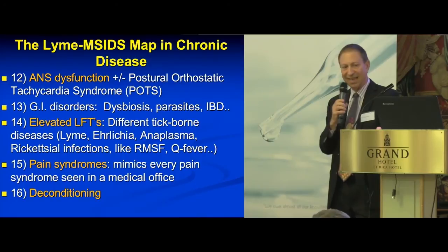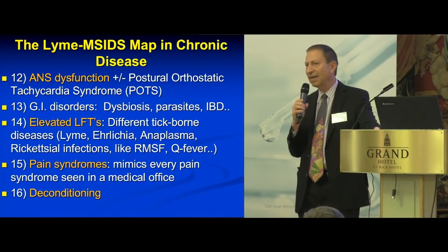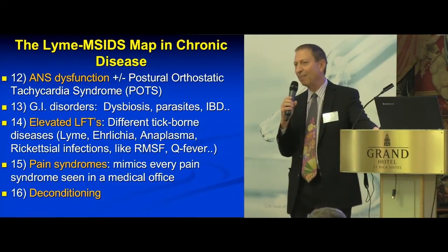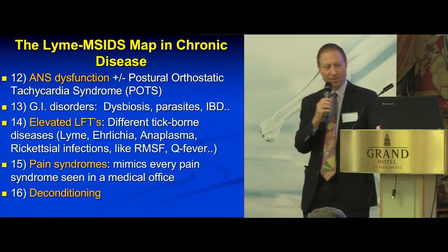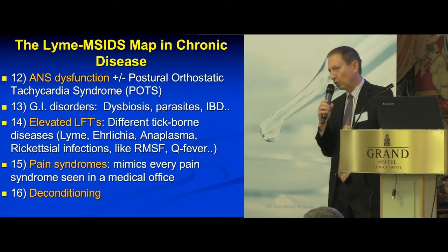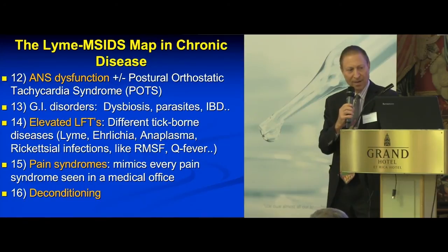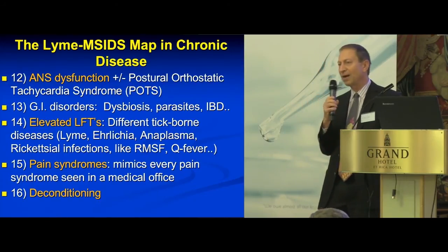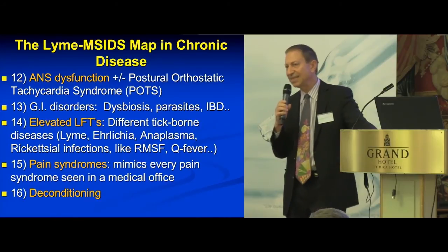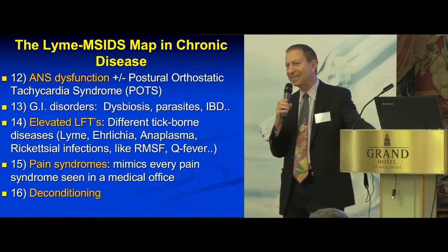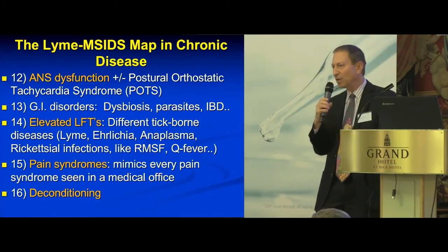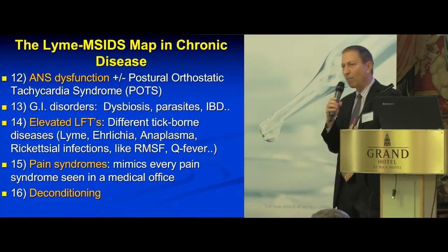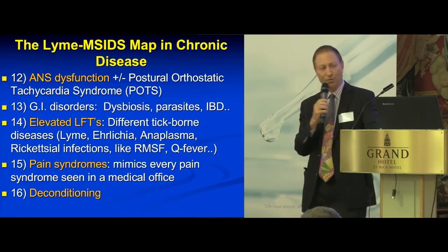Patients also have GI disorders like dysbiosis, parasites, and inflammatory bowel disease. In Crohn's disease, you get increased levels of inflammatory cytokines, and when you add Lyme on top of it, the Crohn's makes the Lyme worse and vice versa. I'll show you studies on low-dose naltrexone for controlling Herxheimer reactions in some of these autoimmune reactions. There are also elevated liver functions — as an internist you'd test for hemochromatosis, Wilson's disease, alpha-1 antitrypsin deficiency, hepatitis A, B, and C — but Lyme and rickettsial infections cause it too. Co-infections like Bartonella and Babesia all raise liver function tests, and many doctors are not looking for this.